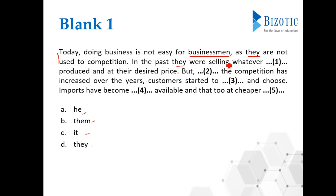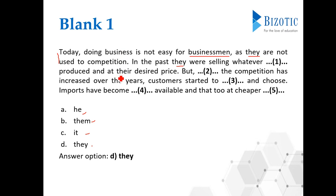'In the past they were selling whatever dash produced.' It cannot be a singular person, so it is not 'he'. It is not 'it' because we are talking about businessmen. It is not 'them'. It is 'they' — whatever they produced. So the first blank is 'they': 'In the past they were selling whatever they produced and at their desired price.' That completes the first sentence.